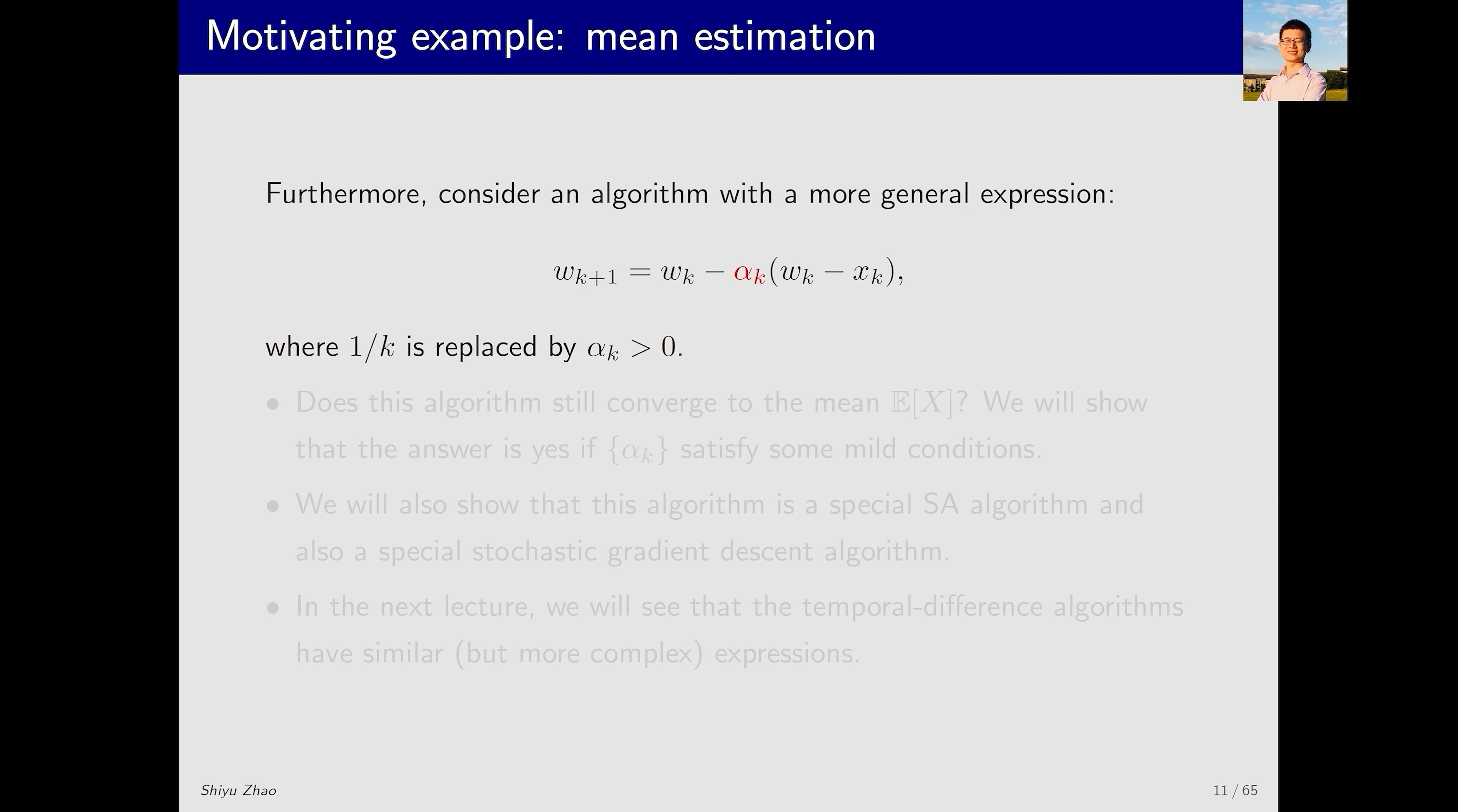This algorithm can be further generalized. Previously, the coefficient was 1 over k. Now we can replace this coefficient with alpha_k, where alpha_k is a positive number. However, if alpha_k is 1 over k as we showed earlier, the series of equations allow us to explicitly express w_1, w_2 and w_3 as the average.